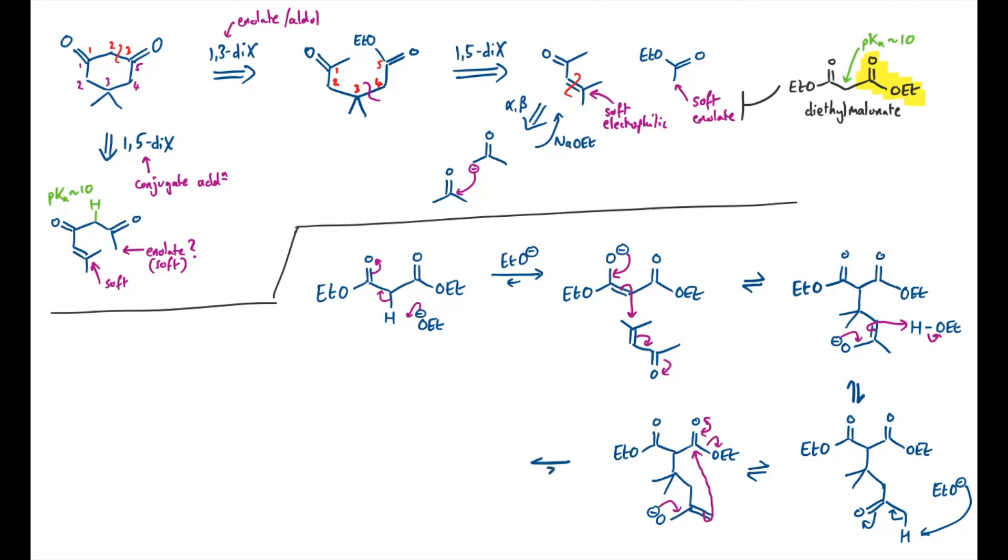So I should be able to do an ester condensation along these lines to kick out another ethoxide. Now this reaction is also reversible but I'd imagine it's very biased over to the ring closed product here. The intramolecular reaction of course increases entropy. You've got one molecule going to two and we've also formed a new carbon-carbon bond in this step.